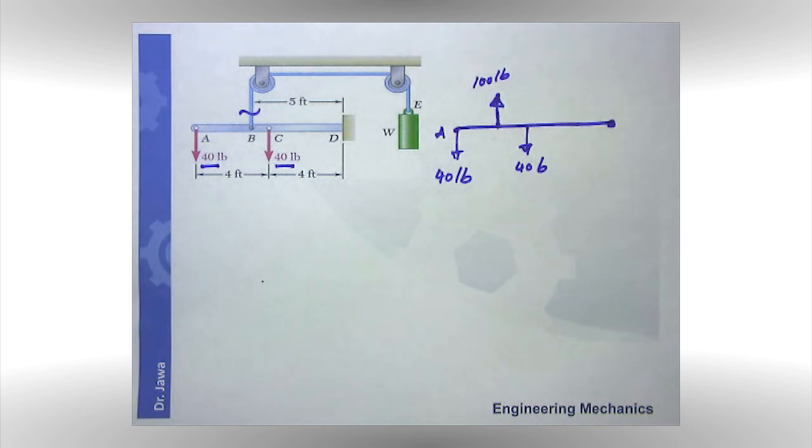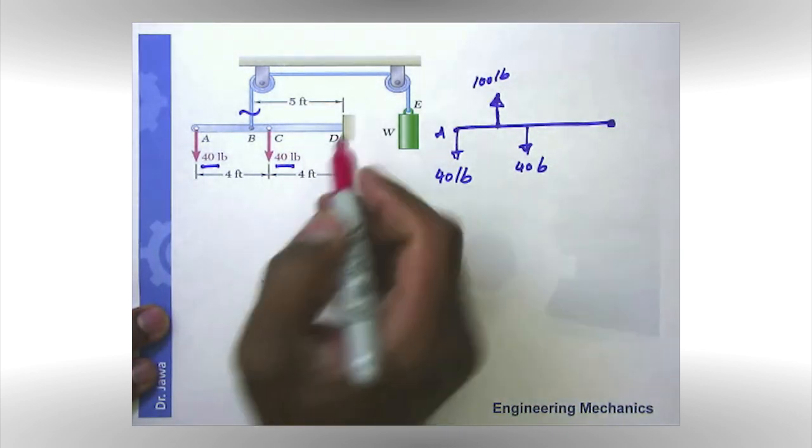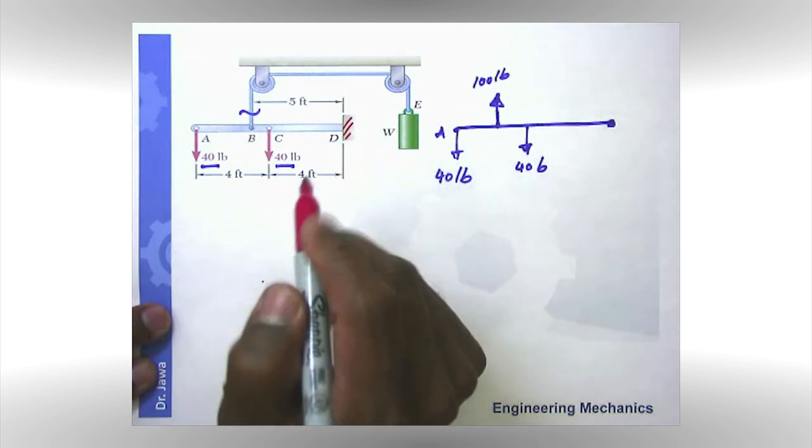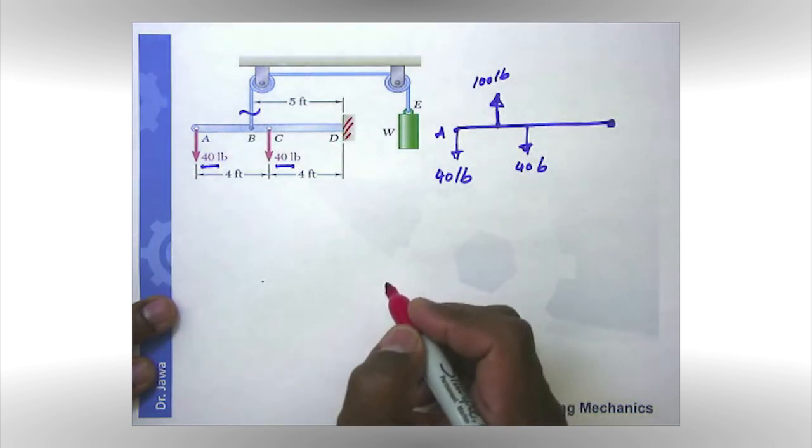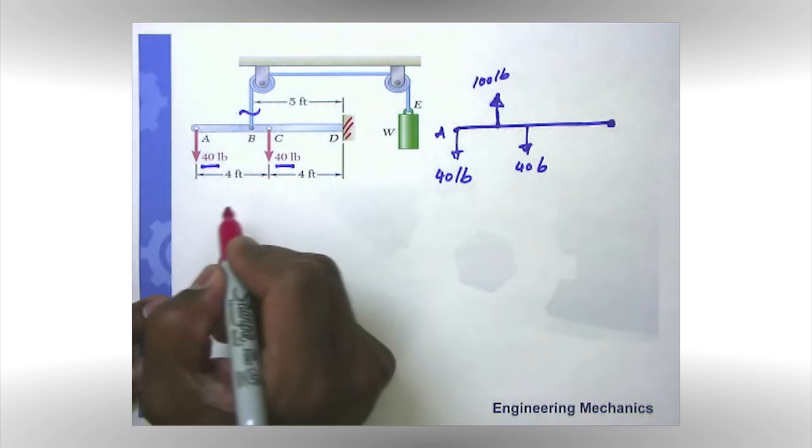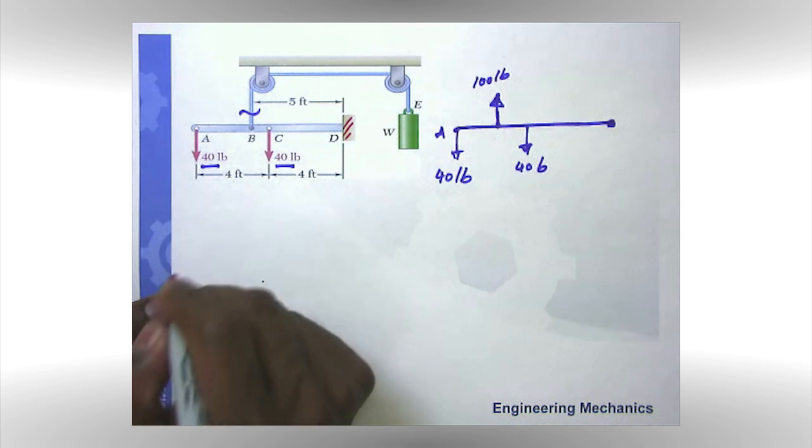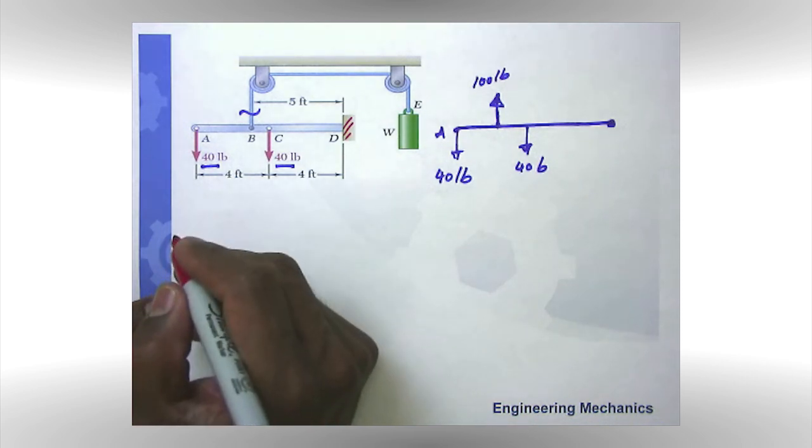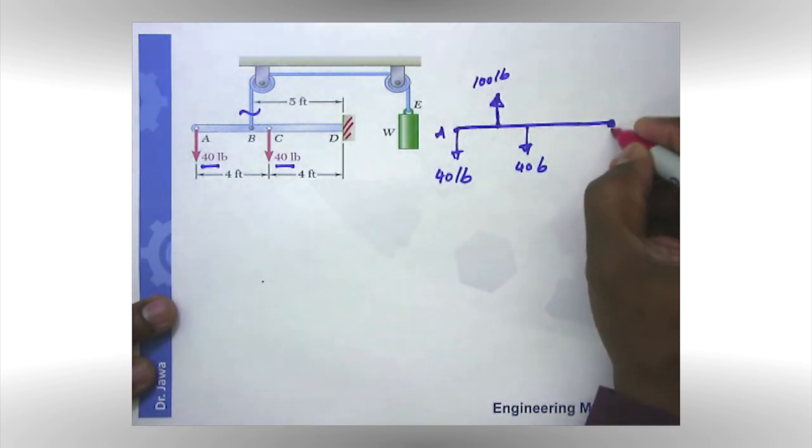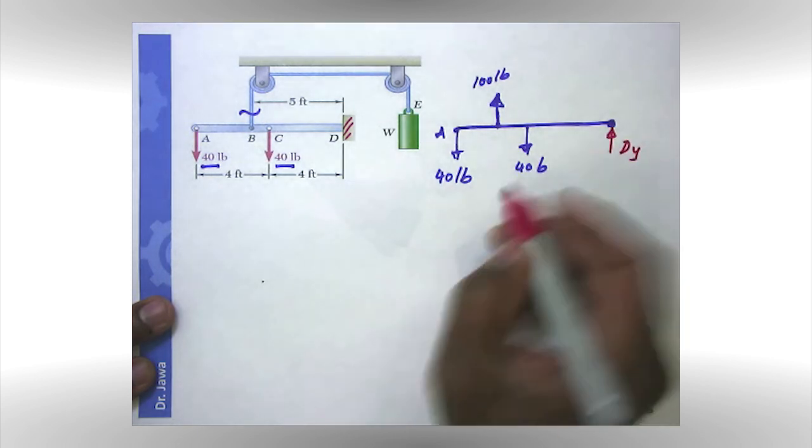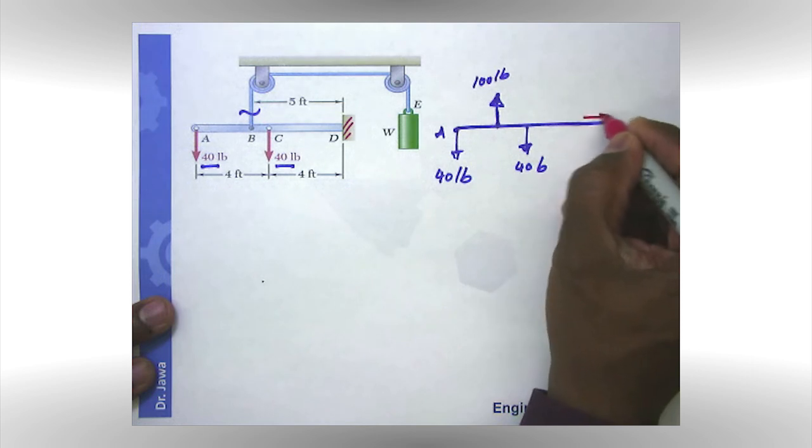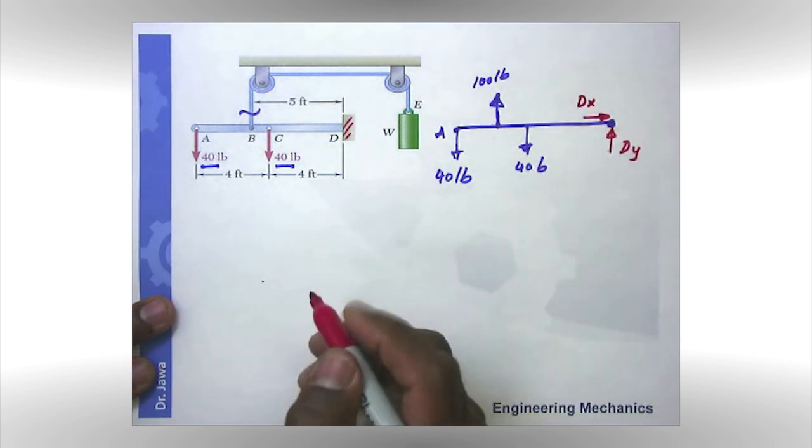And then I go to the support here. And there, as you can see, it is a fixed support. And as you know, the fixed support have three support reactions. I really do not know the directions. I can guess the directions, but I am going to assume they are all positive. And if I get a negative answer, that means my assumed direction is incorrect.